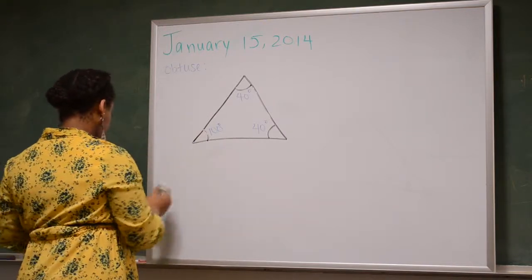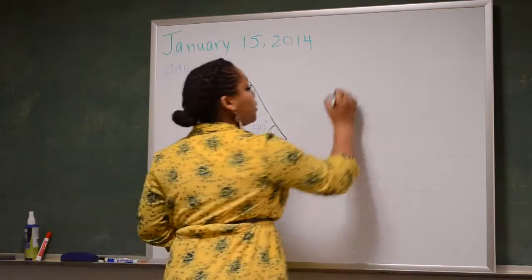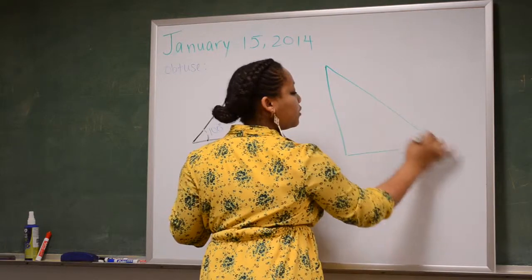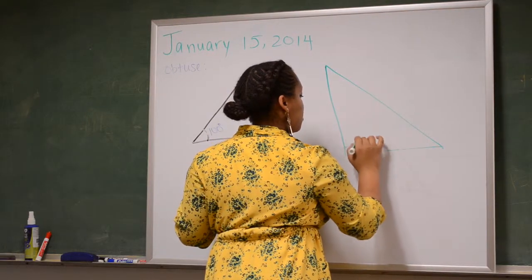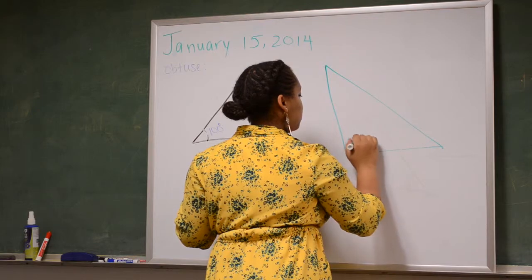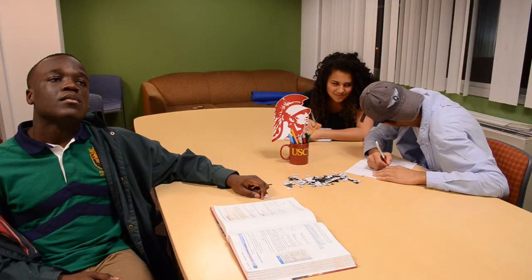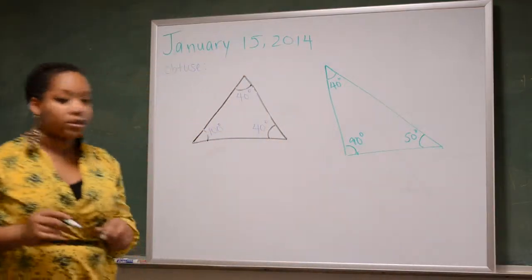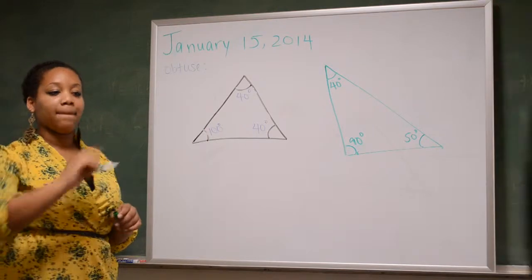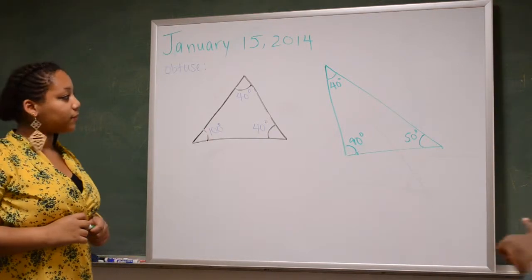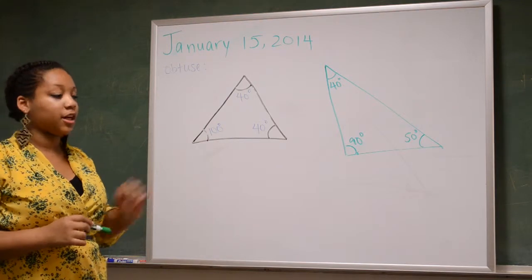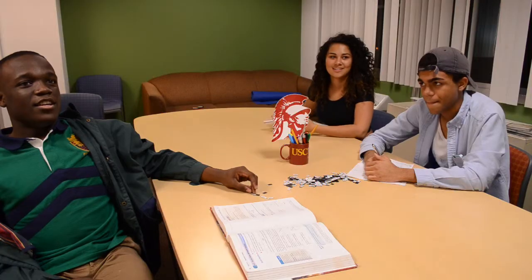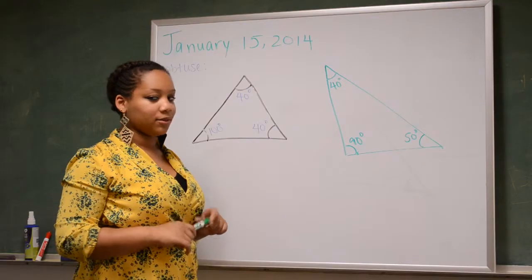So, for another example, someone tell me if this is an obtuse triangle. Yes? No. Why not? Because that angle is equal to 90. Yes. And it's not greater than 90. So, what triangle is it? It's a left triangle. No. You mean a right triangle? Good. It's a right triangle because it has a right angle.